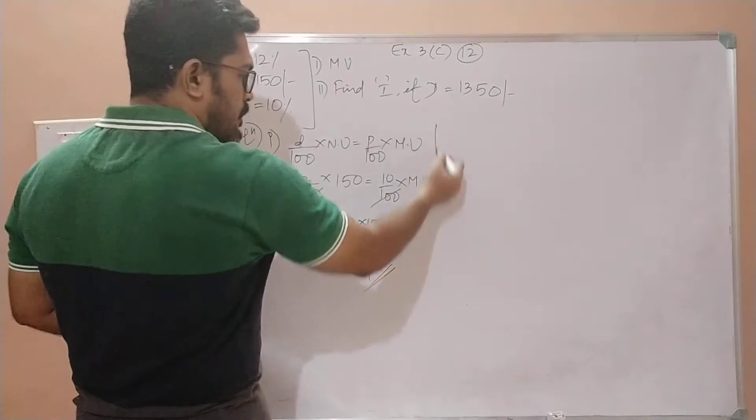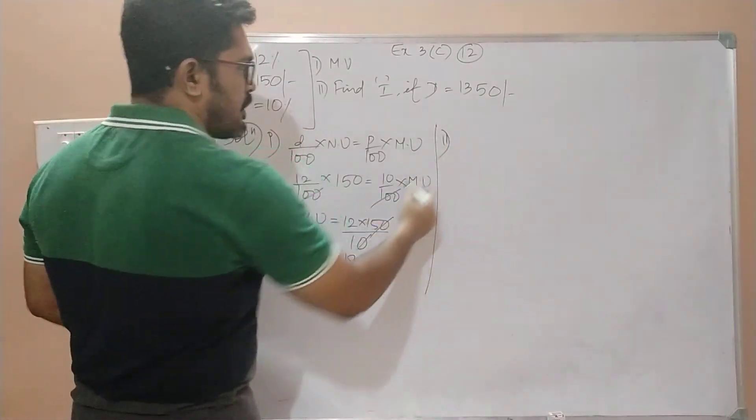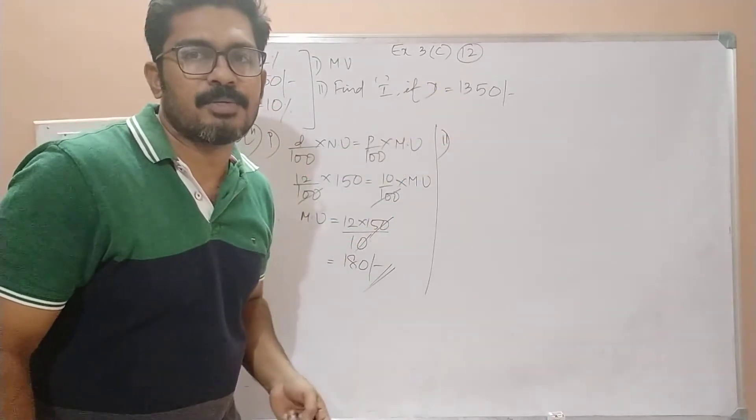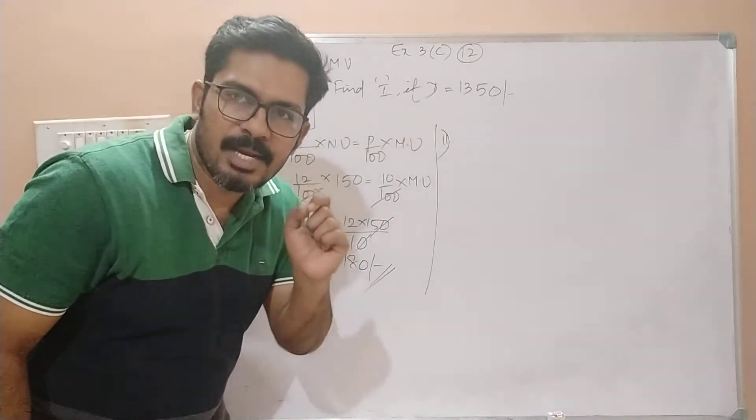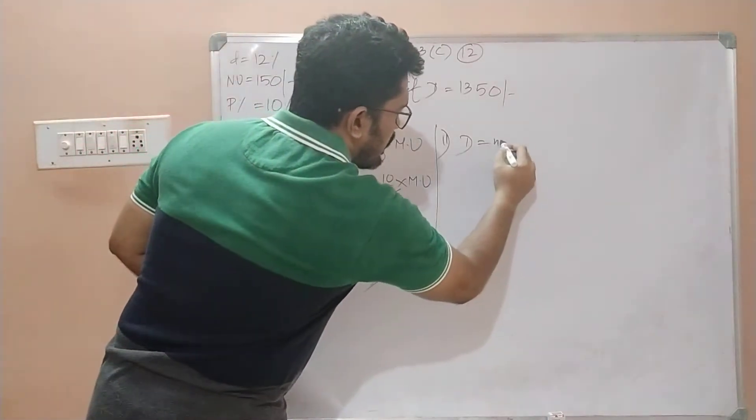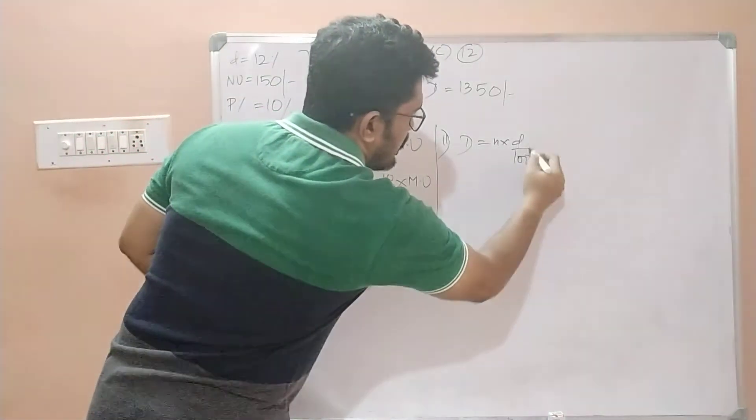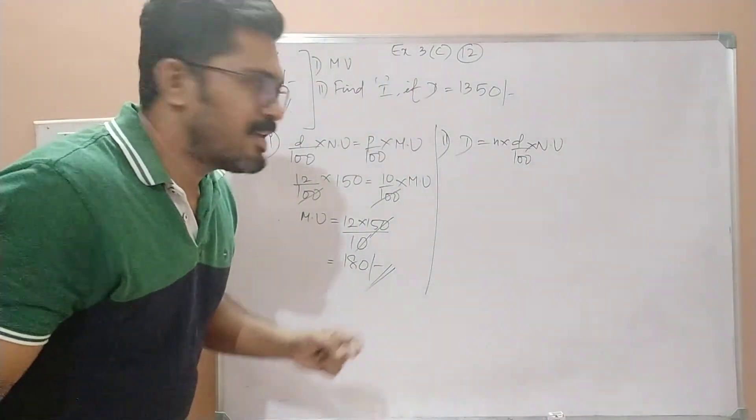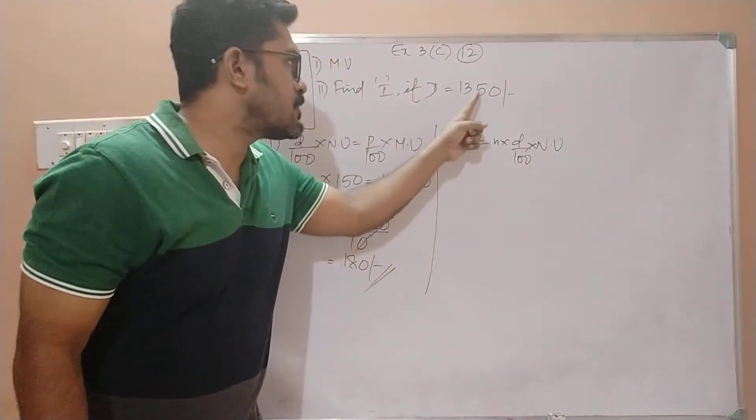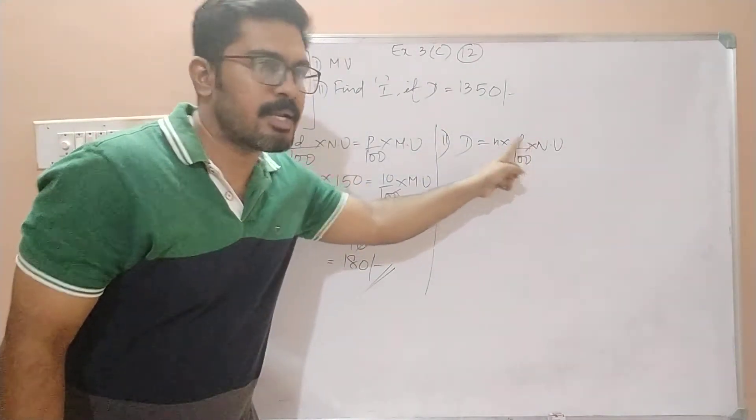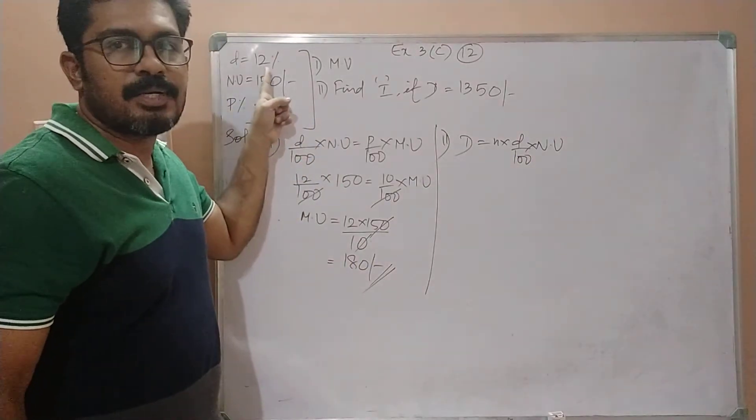Now let us solve the second part. You have to find out the investment that you need to make if the dividend should be 1350. When the dividend is directly given to you, we can make use of the formula d = n × d/100 × nominal value. Now d value is given, 1350. The dividend rate is 12 percent.